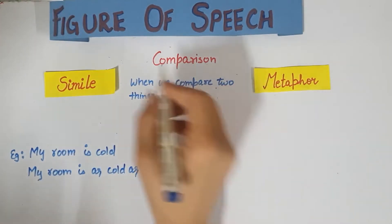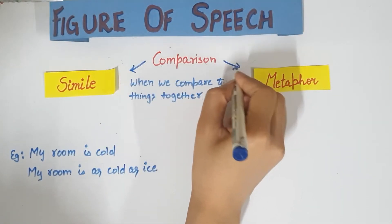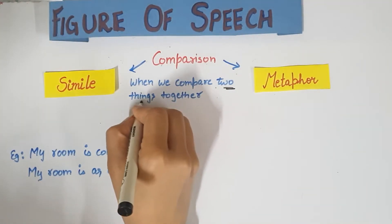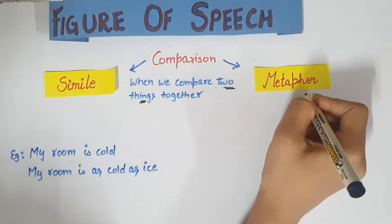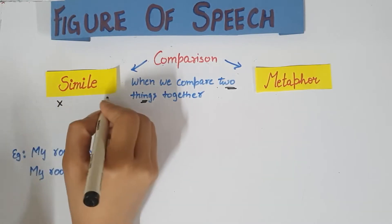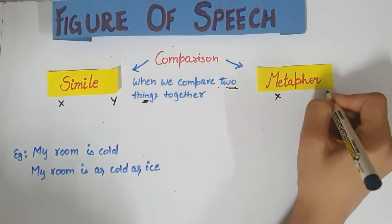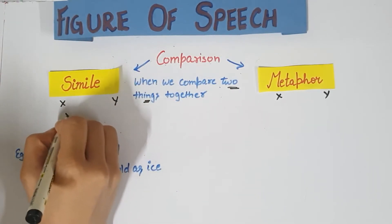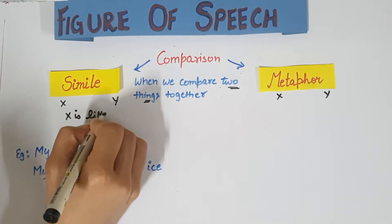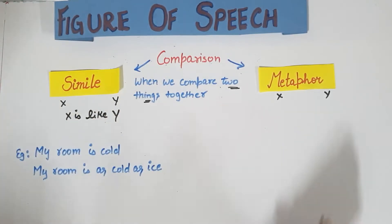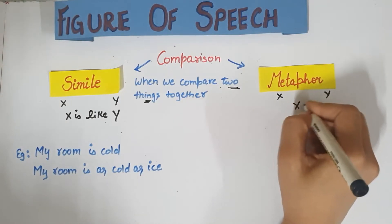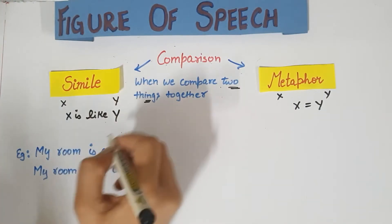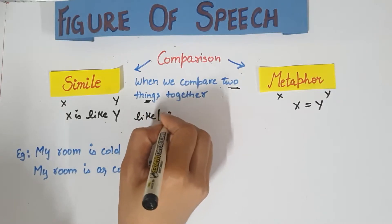Now, simile and metaphor — in both of them we talk about comparison, comparing two different things together. In simile, we take X and Y, and we say that X is like Y. In metaphor, we directly say that X is Y — X is equal to Y. In simile, we use either 'like' or 'as' to show the comparison.